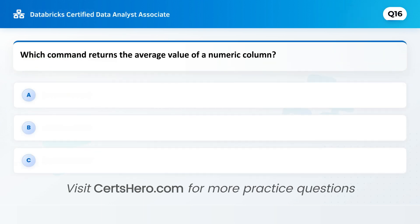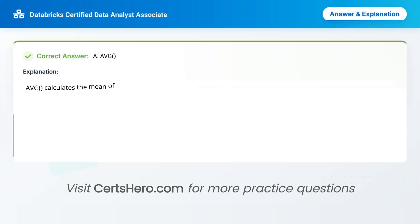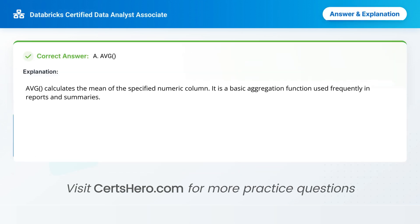Which command returns the average value of a numeric column? A. Avg. B. Max. C. Median. Correct answer is A: Avg. AVG calculates the mean of the specified numeric column. It is a basic aggregation function used frequently in reports and summaries.